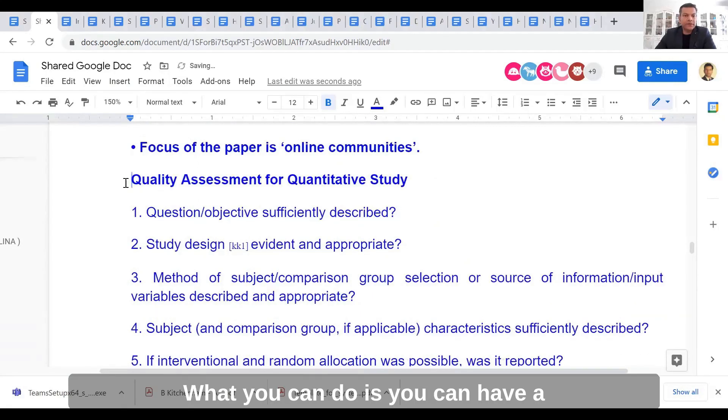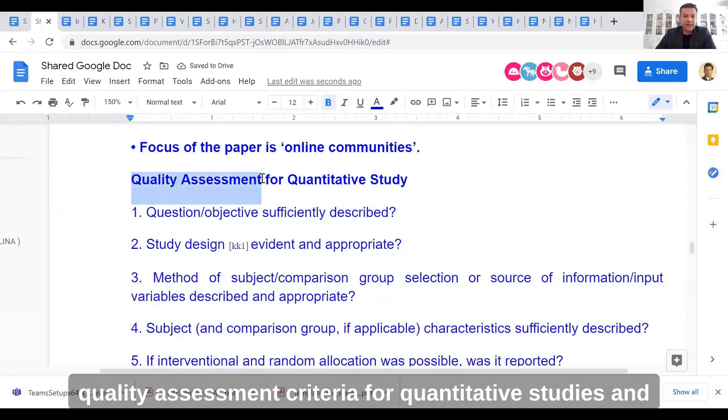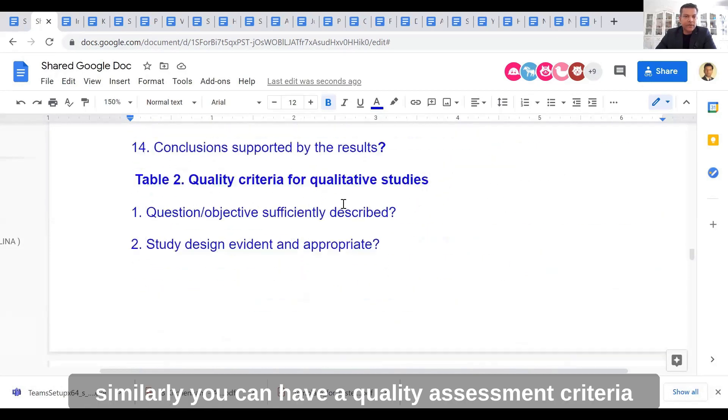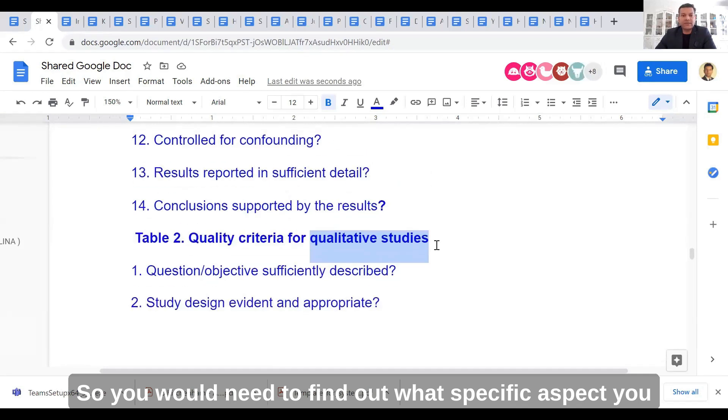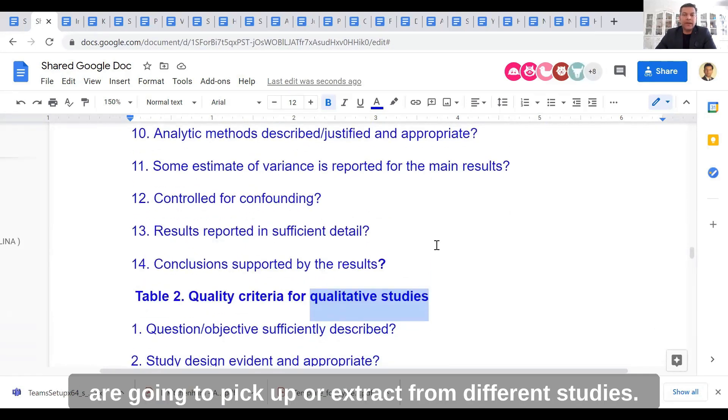A good idea is to have quality assessment criteria for quantitative studies and similarly for qualitative studies, because these study types are different. You would need to find out what specific aspects you are going to pick up or extract from different studies.